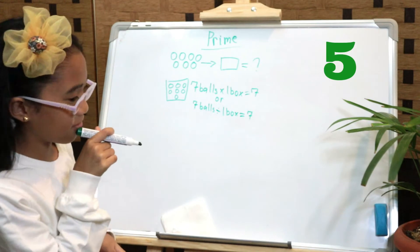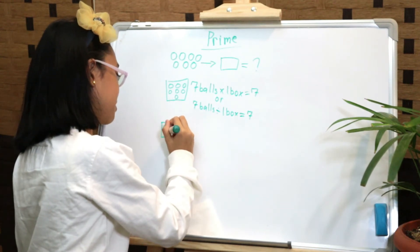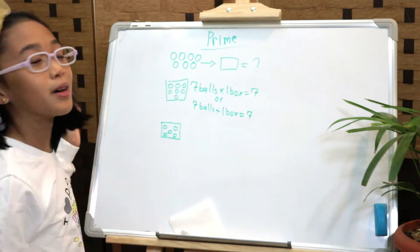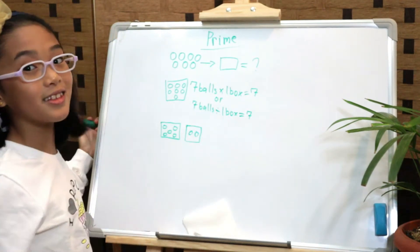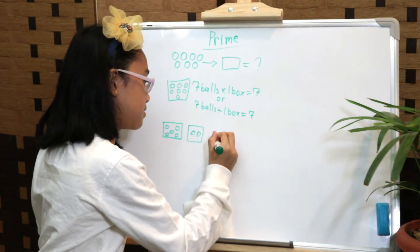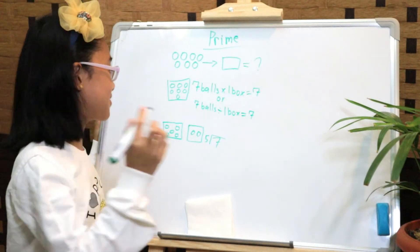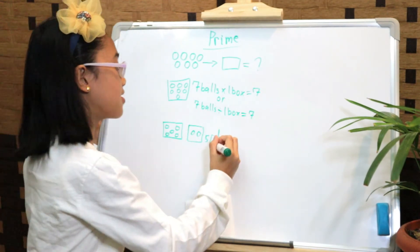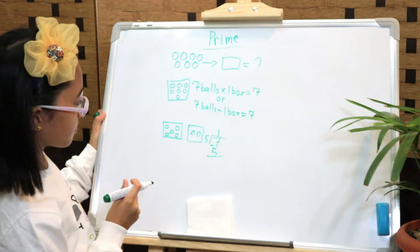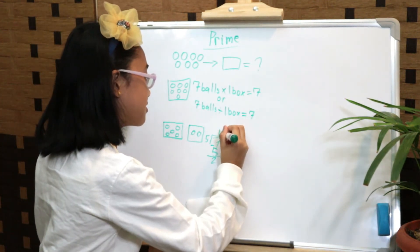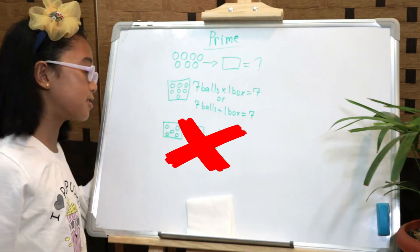Let's try five. One box: one, two, three, four, five balls. Now let's add some more — two more, that makes seven. Seven divided by five: one times five is five. Seven minus five equals two. The remainder is two, so five is also not a factor of seven.